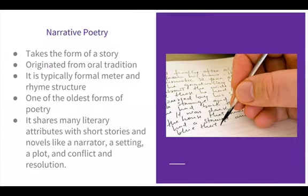So let's talk about narrative poetry. Narrative poetry takes the form of a story and originated from oral tradition where people would share epic poetry aloud. It is typically in a formal meter and has a rhyme structure. It is one of the oldest forms of poetry and it shares many literary attributes with short stories and novels like having a narrator, a setting, and a plot.